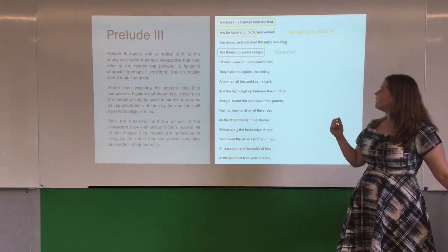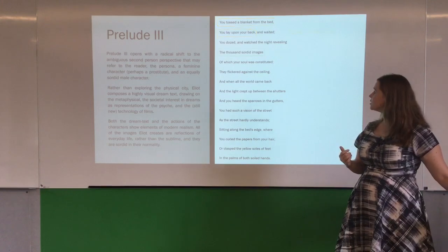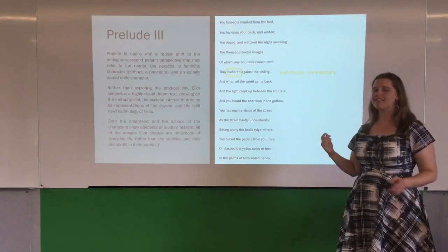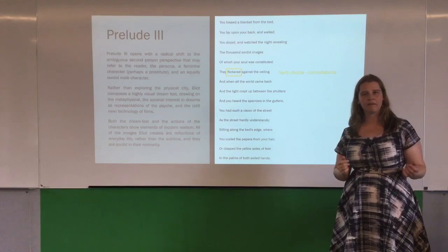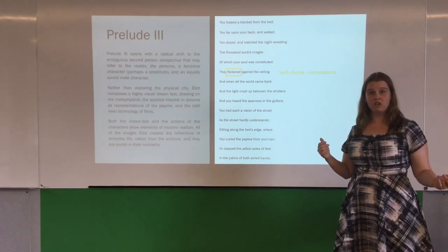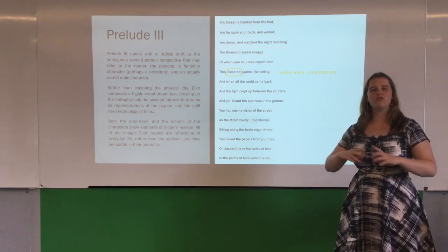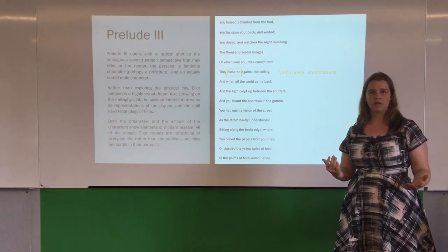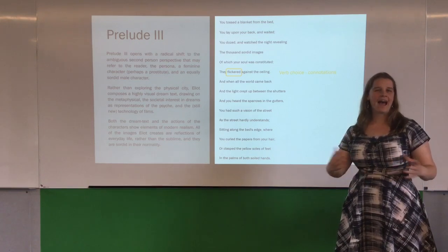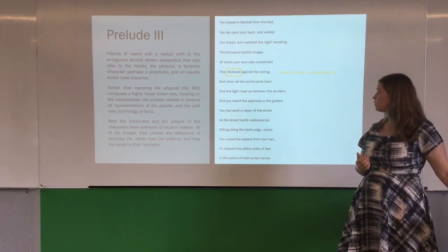We also have T.S. Eliot himself recognising that these are sordid images. When we look at the verb choice, how are these images playing? They're flickering against the ceiling — moving pictures. Films are still new at this point, and many people said that they would flicker, so this has a dreamlike quality. It has a quality of being an act, in the same way the masquerade did in Prelude 2.